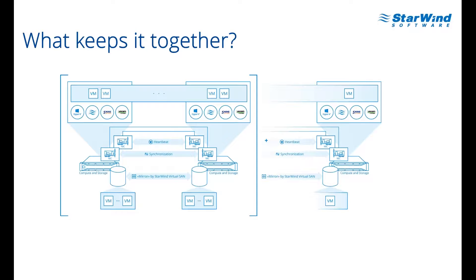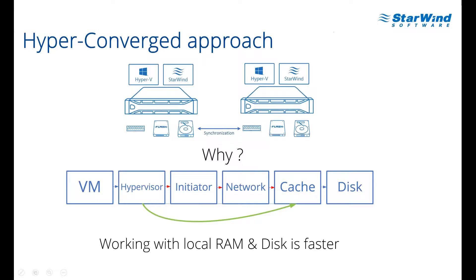I want to talk more about the storage part of the system. Why did we choose the hyperconverged approach over an industry-standard SAN? The reason is speed. With a hyperconverged approach, we effectively bypass the steps shown by the red arrows on screen. With a traditional SAN solution, IO from a virtual machine goes to the hypervisor, then to the initiator, then to a storage network, then to the SAN cache, and only then to disk.